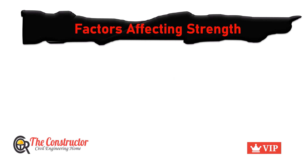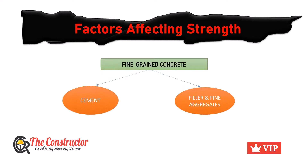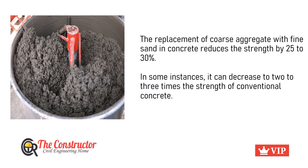Factors affecting fine grain concrete are the next important topic to be studied. As fine grain concrete is rich with sand and filler particles, the primary factor that governs its strength is the quality of the fine aggregates. The quality of fine aggregates influences the basic properties of fine grain concrete to a higher extent than for conventional concrete. As per several studies, replacement of coarse aggregates with fine sand reduces the strength by 25–30%, and in some instances it can decrease to 2 or 3 times the strength of conventional concrete.